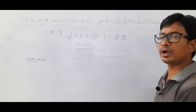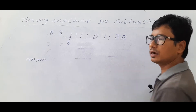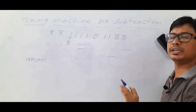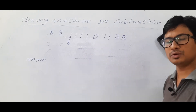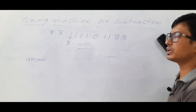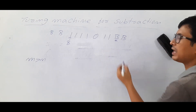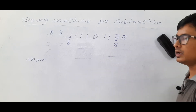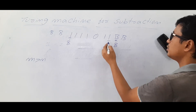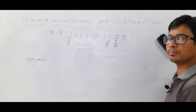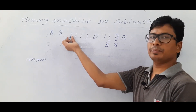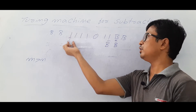What I will do is take the first 1, convert it into a blank, and keep moving to the right. If I see any 1s I keep them as 1 and move right; if I see a 0, I keep it as 0 and move right. Finally I reach a blank, keep it as a blank, and move to the left — so the tape head is now in the n region.